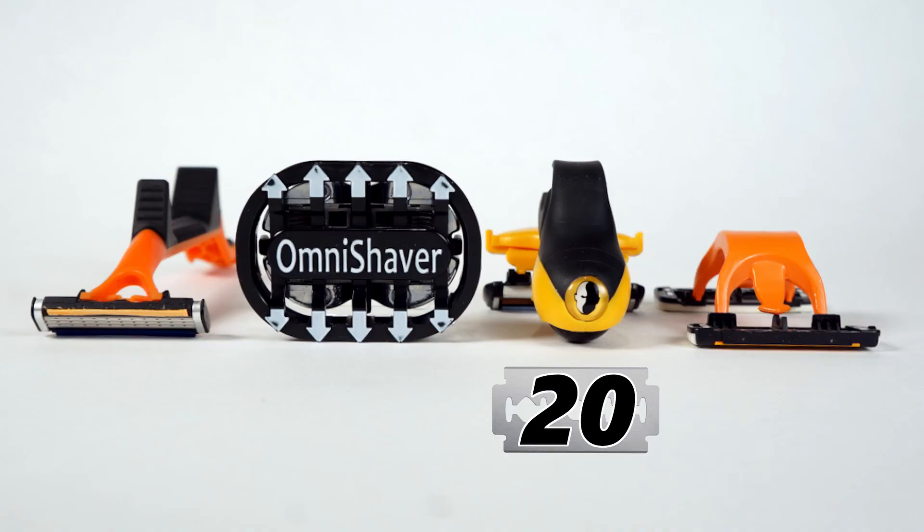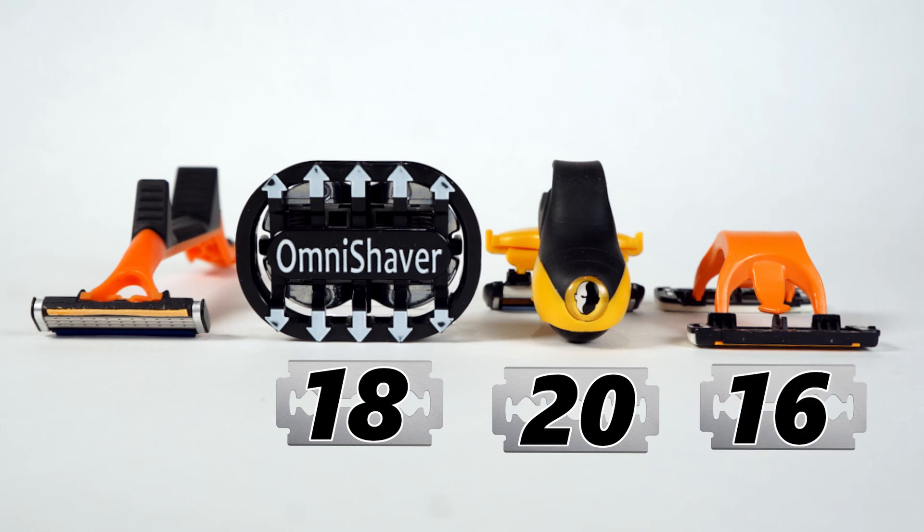So let's do a quick recap. The head blade gets 20 of 22. The omni shaver gets 18 of 22. The halftime razor gets 16 of 22, and last and well, least, the head shark gets 9 of 22 points.